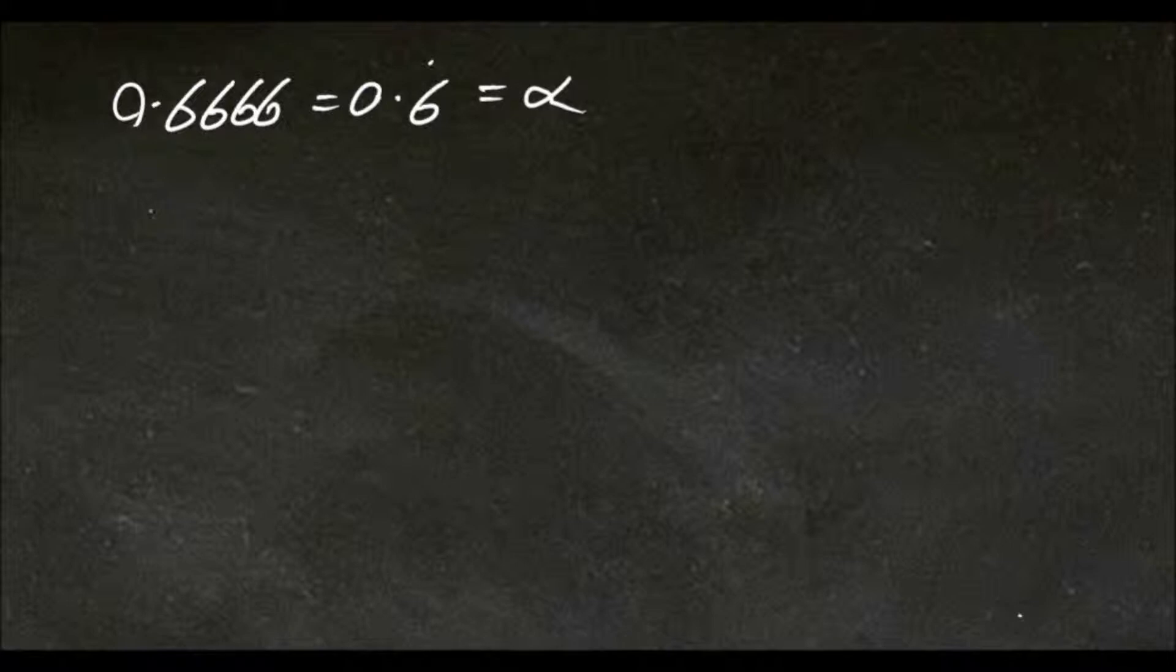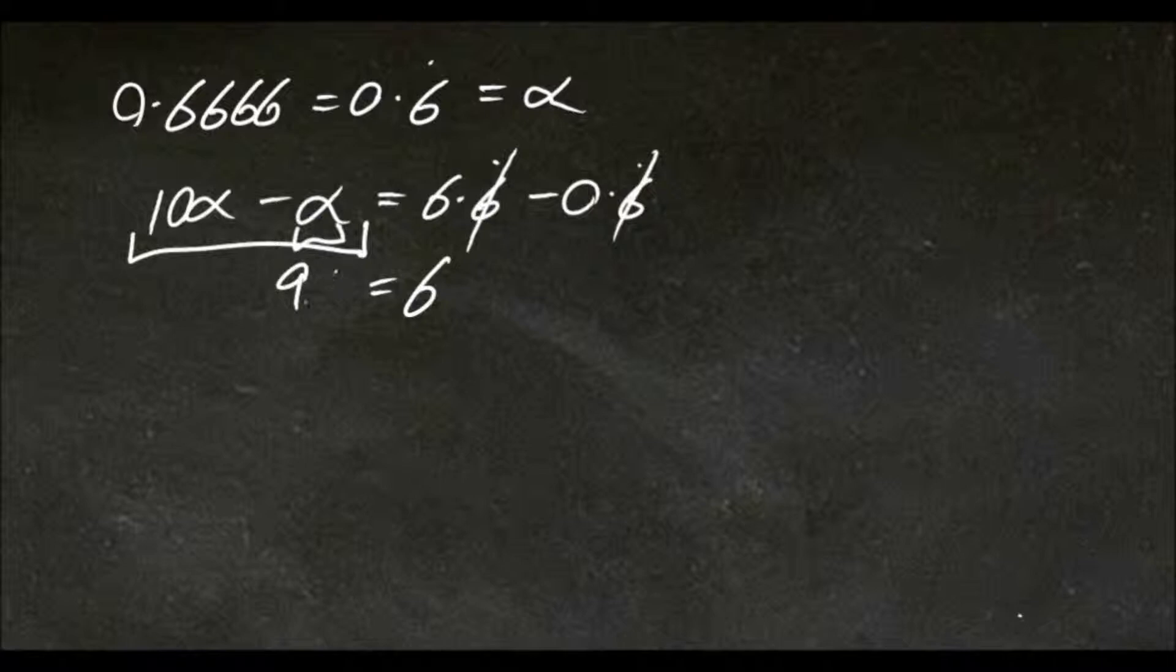Now if we said 10 alpha minus alpha, this would be 6.6 repeater, minus this one which is just our original one. So you can see with this, we would cancel, and you'd be left with 6. And this can be simplified to 9 alpha.